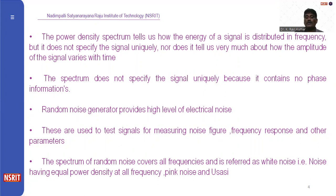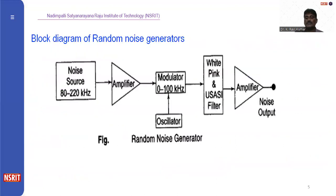The spectrum of random noise covers all frequencies and is referred to as white noise — noise having equal power density at all frequencies. Two more types of noise are pink noise and USASI noise.